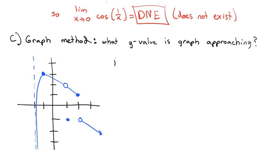The first question is: what is the limit as x approaches -1 of this function? As x approaches -1, the graph is approaching a y-value of 3. So the limit as x approaches -1 is 3.